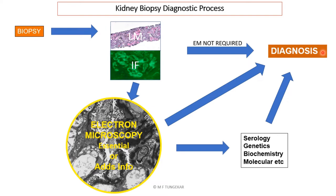After obtaining this information, it may be possible to render a final morphological diagnosis or a differential diagnosis. The diagnosis should describe the state of the renal tissue, explain the pathological process behind it, inform the nephrologist about the prognosis of the case, and also the best possible management of the case — and should explain the clinical situation fully. That is an ideal morphological diagnosis.